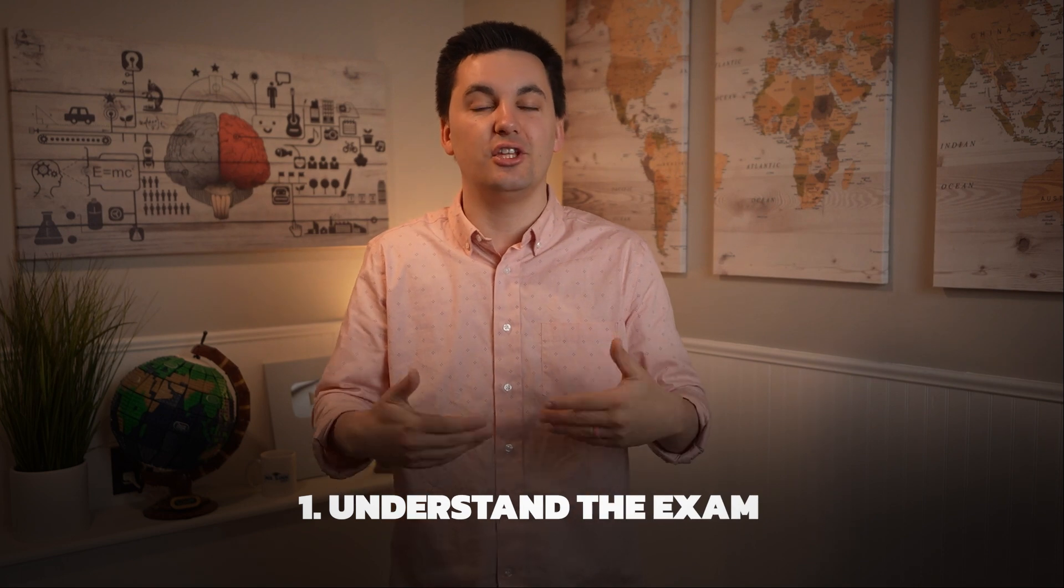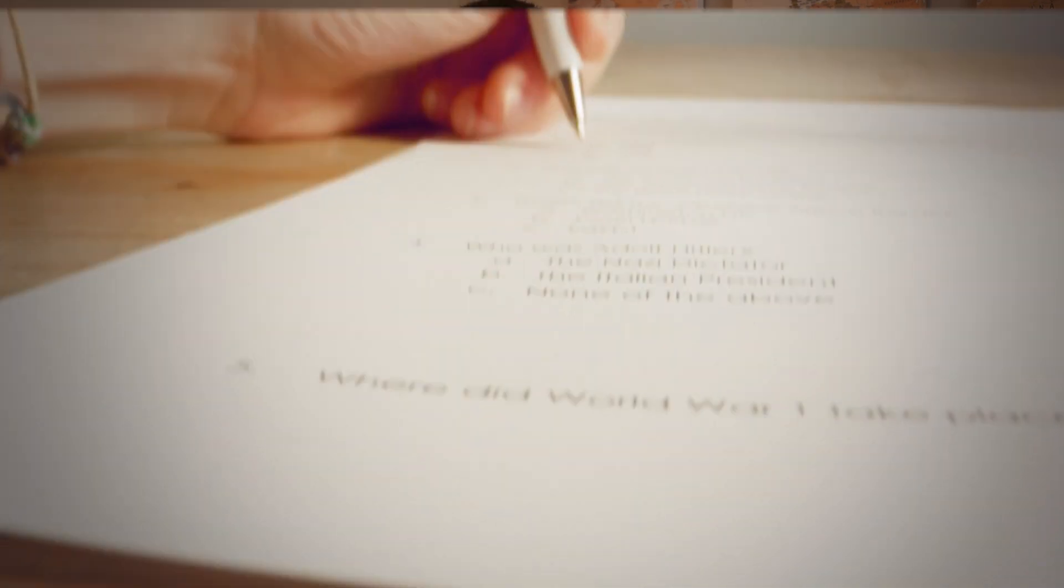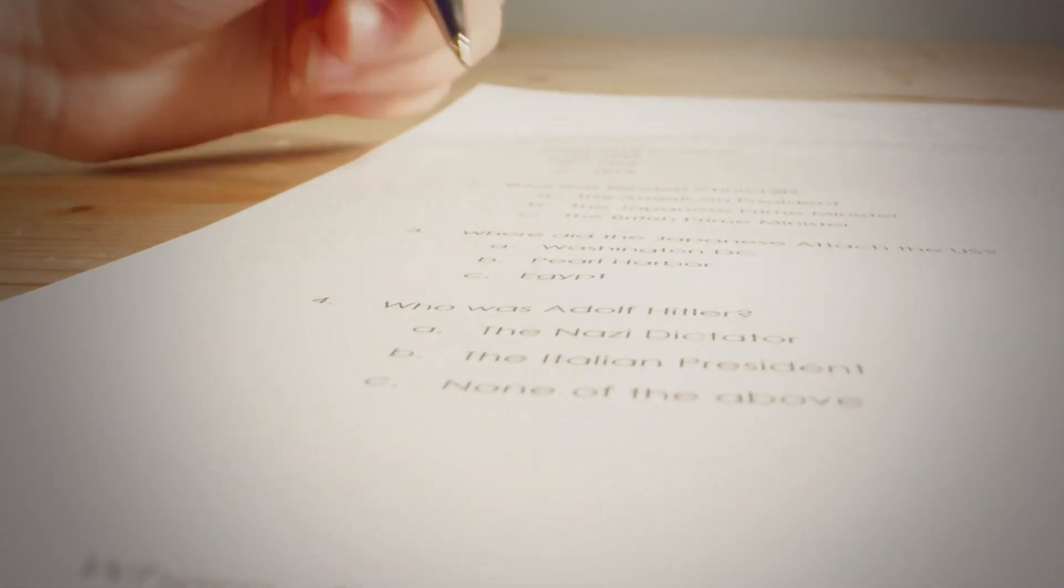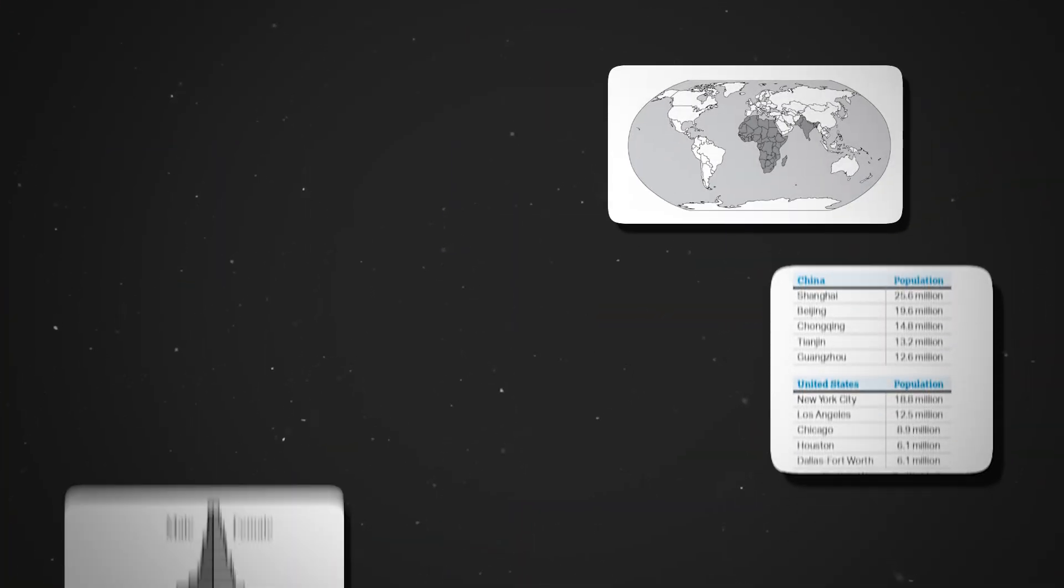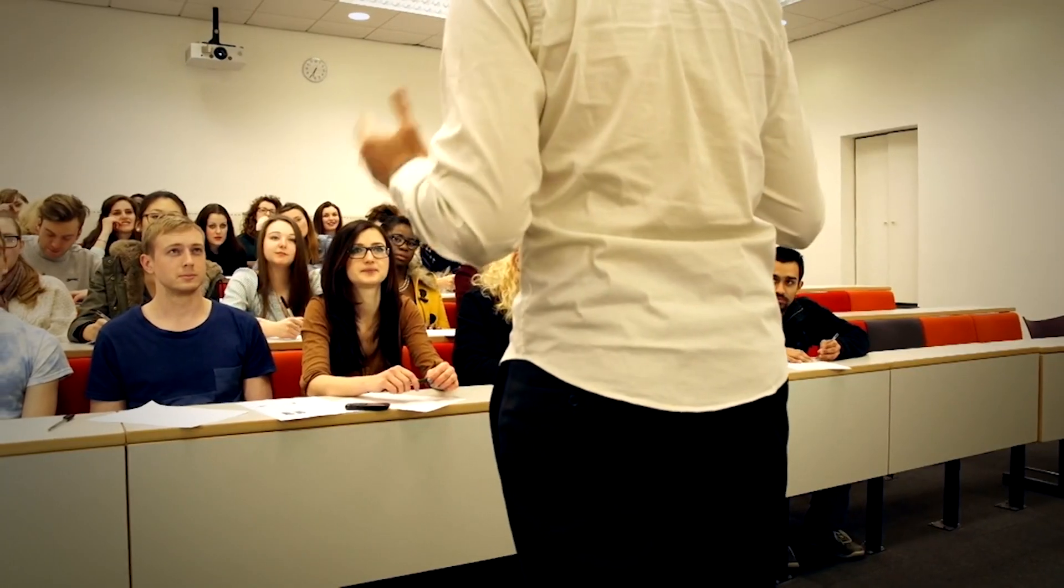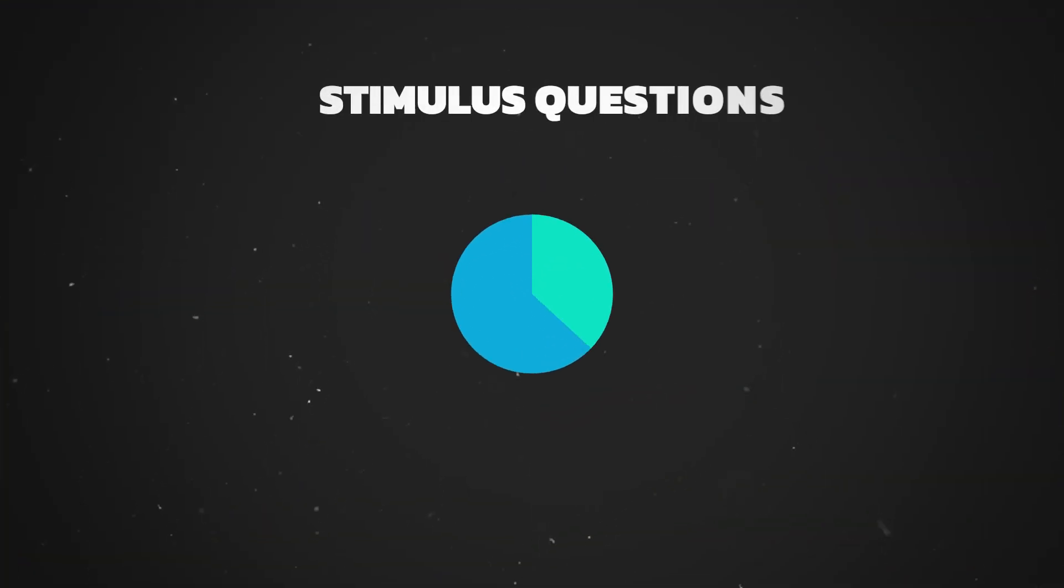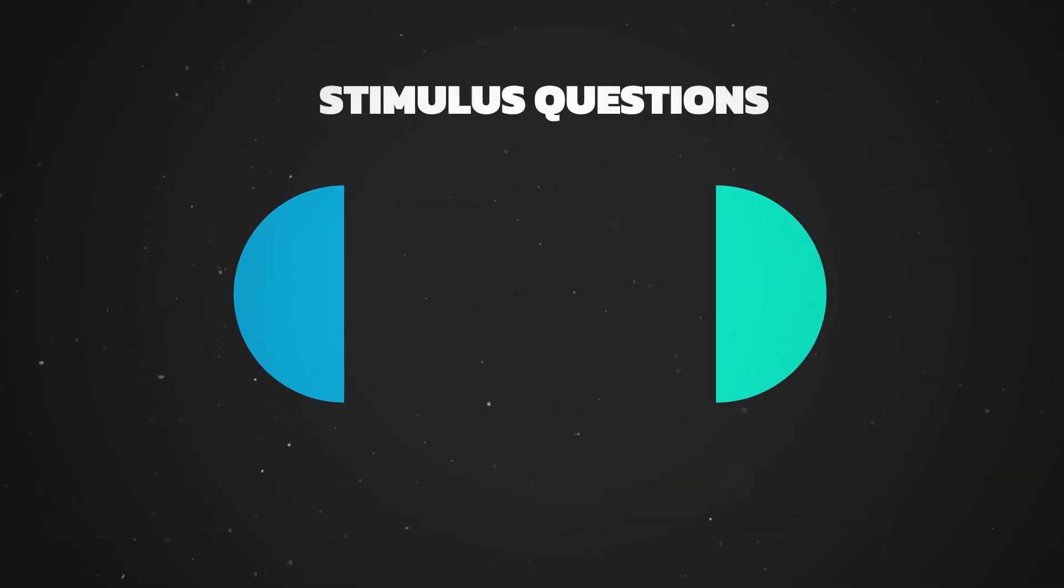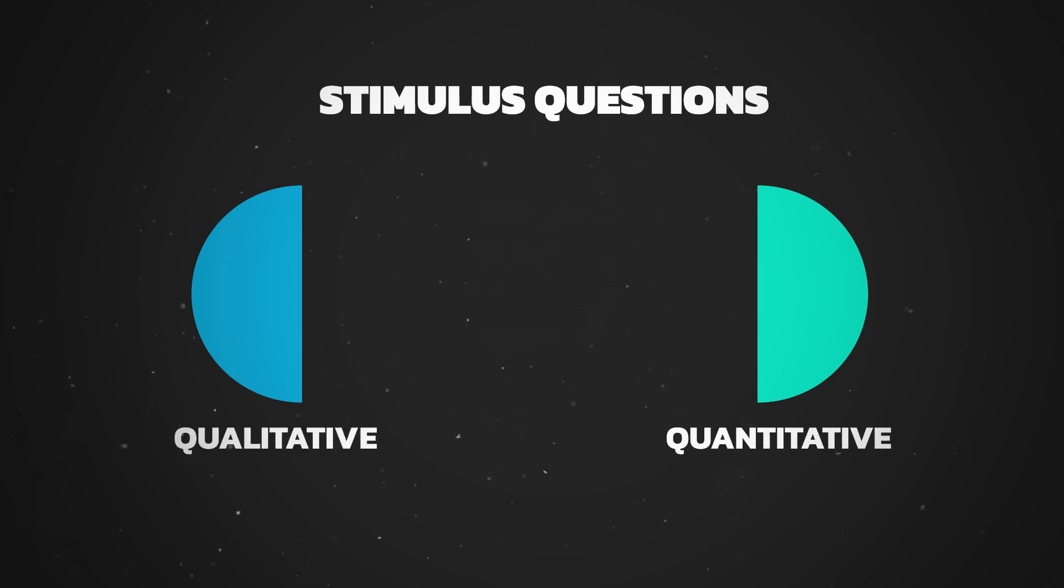This leads me to my first tip, which is we need to understand the exam. We already went over the format of the multiple choice section, but lucky for you, the College Board has also told us exactly what stimuli we need to be prepared for. We can see that stimulus materials will include maps, tables, charts, graphs, images, infographs, and/or landscapes. College Board has also let us know that these stimulus questions will be evenly split between quantitative and qualitative sources.